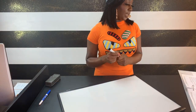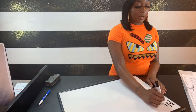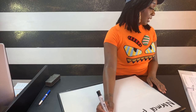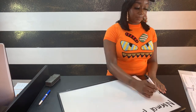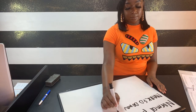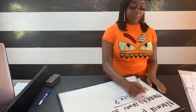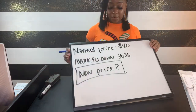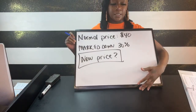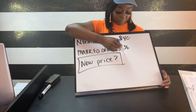Our next example says the normal price of denim jeans at House of Jyl is $40, but the price has been marked down by 30%. What is the new selling price? Essentially, jeans were originally $40 and they've been marked down 30% — just like a discount. First, we convert 30% to a decimal: 0.3.